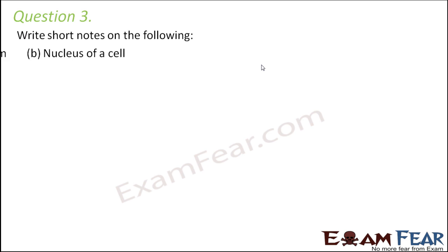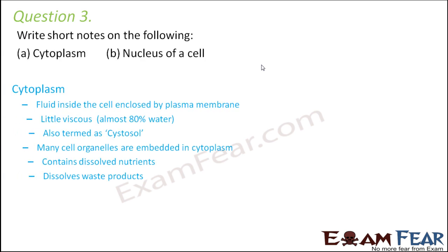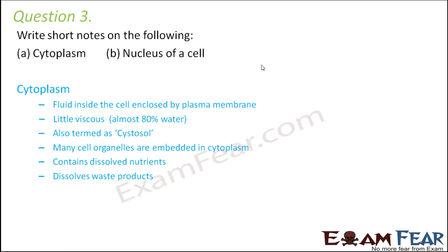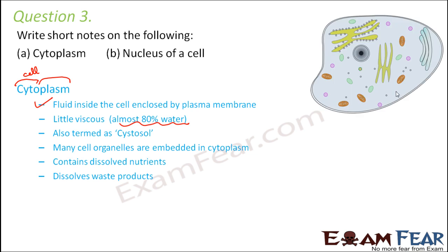Question number three: write short notes on cytoplasm and nucleus. Cytoplasm is the fluid present inside the cell, enclosed by the plasma membrane. It has almost 80% water, so it is less viscous. It is also called cytosol. All the organelles are embedded in the cytoplasm. It also contains dissolved nutrients and can dissolve waste products and send them out of the cell, acting as a medium for transfer of materials.